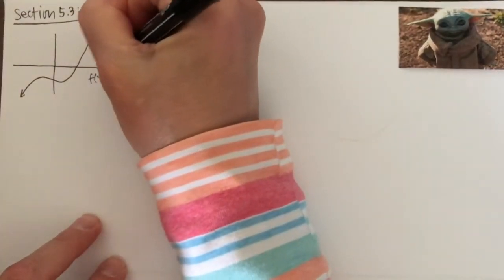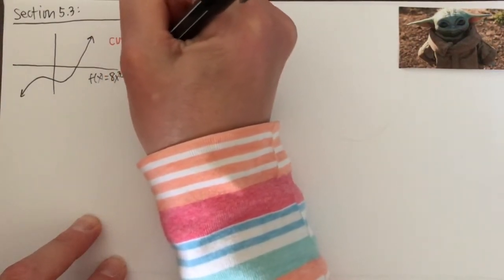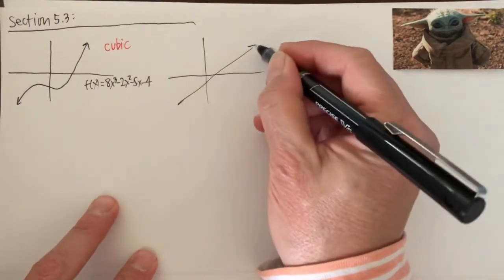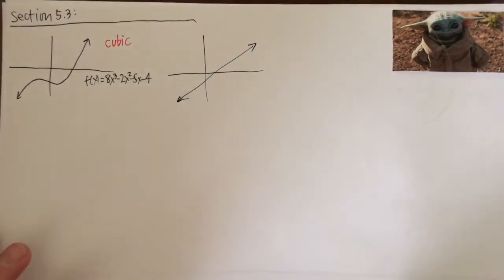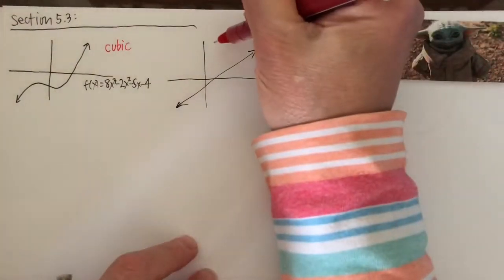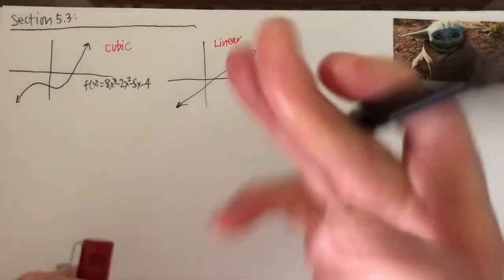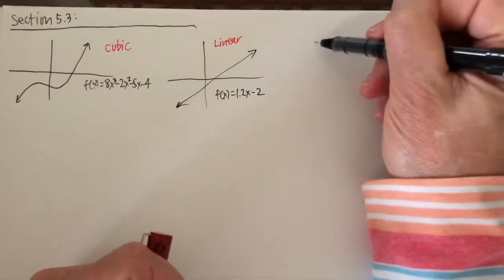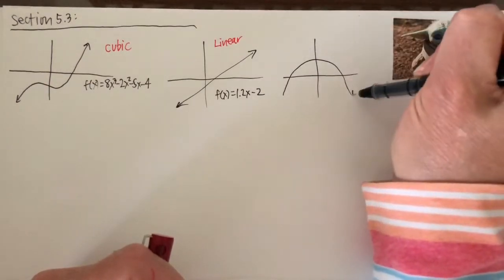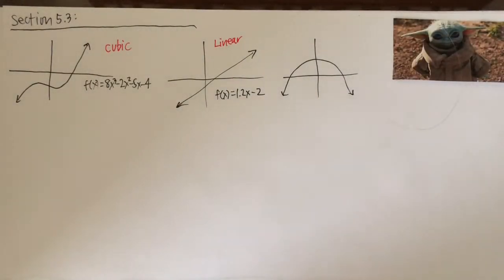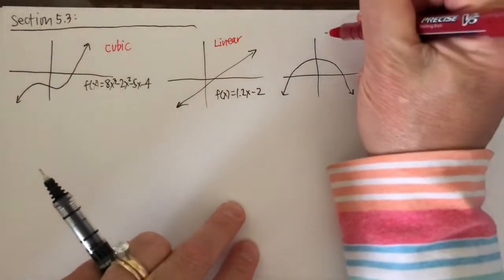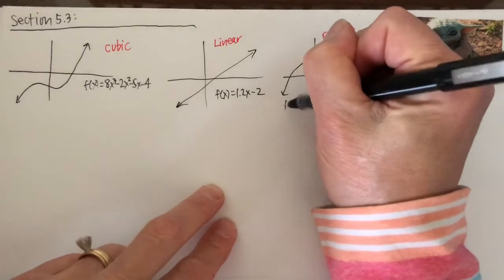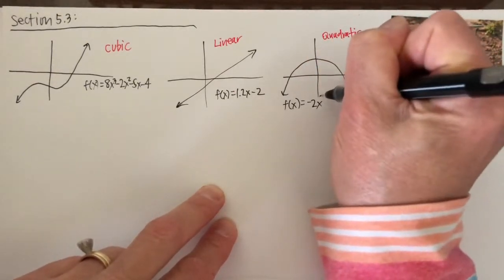This one happens to be f of x equals 8x cubed minus 2x squared minus 5x minus 4. What if we saw a function that looked like a straight line? That's a linear function — something like f of x equals 1.2x minus 2, with a slope and a y-intercept. And if we came across a parabola, an upside-down parabola, that's a quadratic. Quadratics always have their highest power as a squared term, and we know this leading coefficient is negative because the parabola is pointing down.